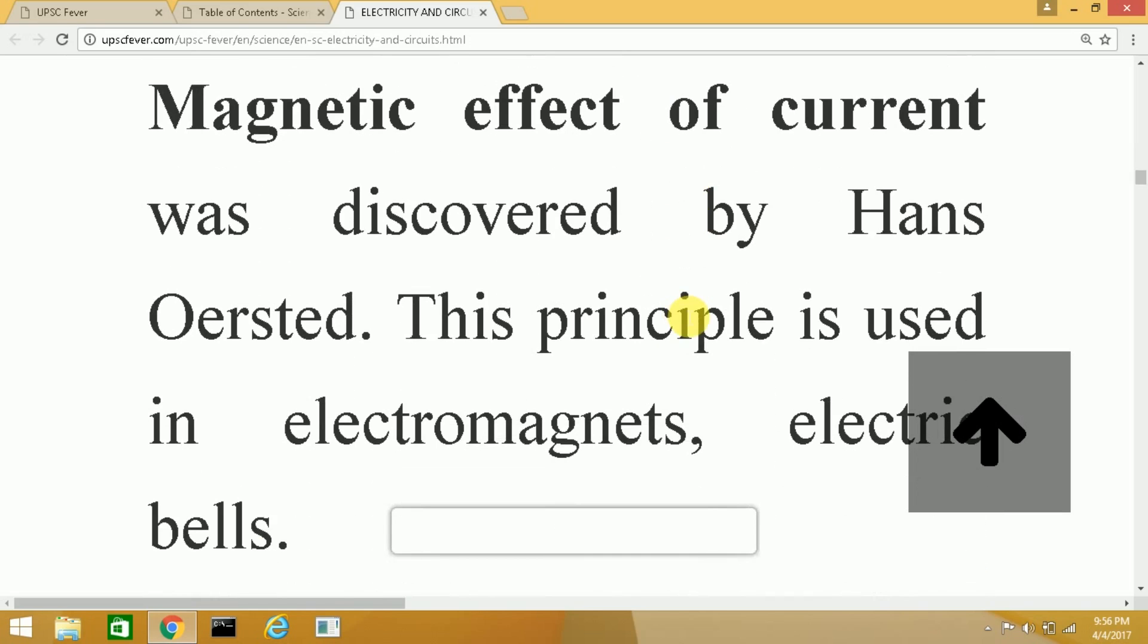When a current is passed through this, it becomes magnetic and attracts the metal object and this attraction leads to ringing, which is the principle of an electric bell.